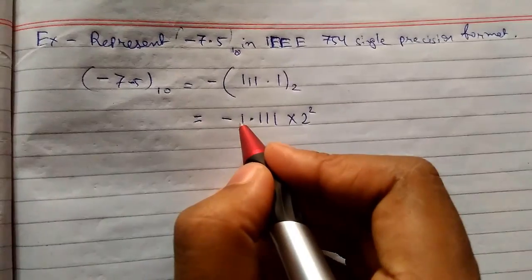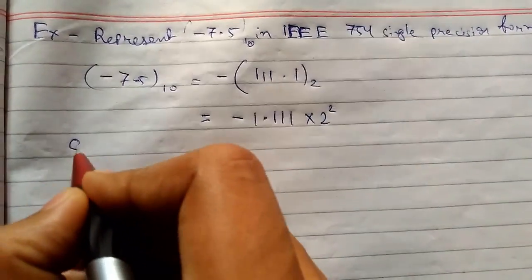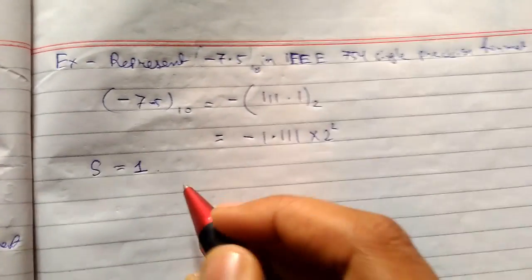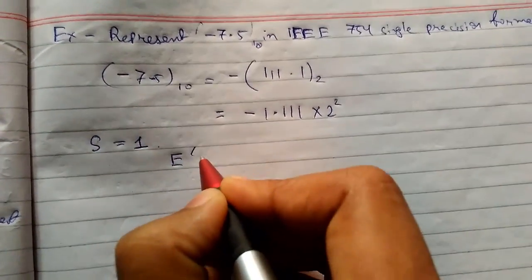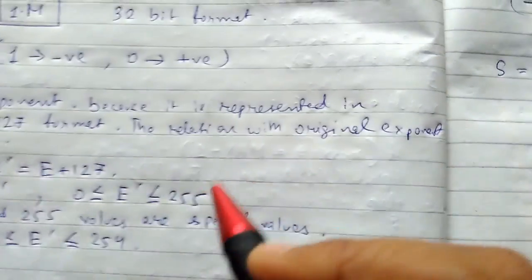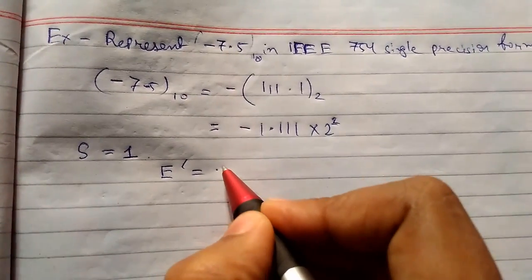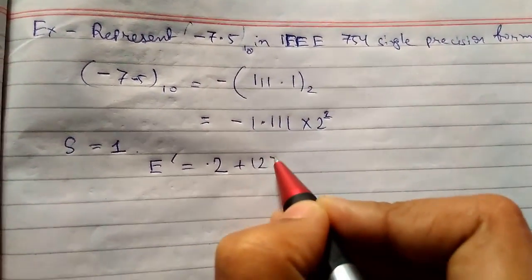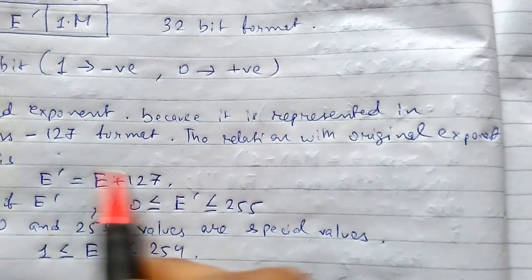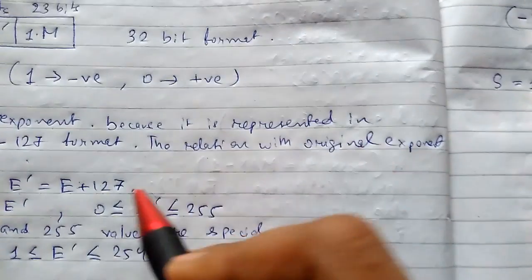The exponent has base 2. Since there is a minus sign, the sign bit S must be 1. As shown in our diagram — S, E-bar, M — the sign bit is 1 for negative. Now we find E-bar: E-bar = 2 + 127.